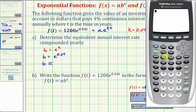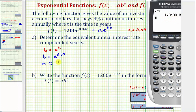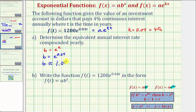For e, if we press second natural log, this brings up e raised to the power of, and our exponent is just 0.04, enter. So the base to four decimal places will be approximately 1.0408.